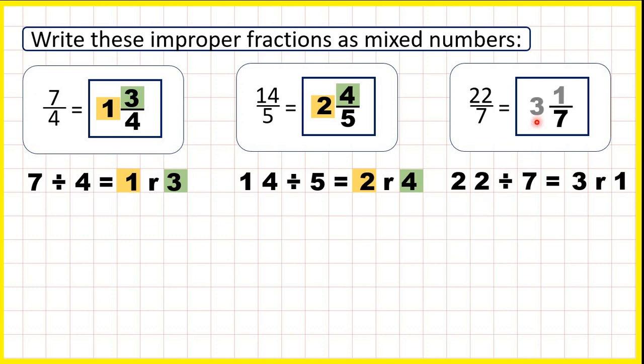So, our mixed number is 3 and 1 seventh. Our whole number is 3, our remainder 1 is the numerator, so we have 3 and 1 seventh.